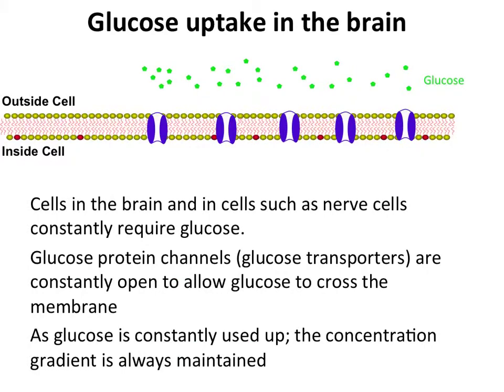The last thing important to note here — which will become apparent as we move on to talk about glucose transport into muscle and fat cells — is that these transport channels within the membrane are always there. That means they are not upregulated or downregulated. Instead, they are always expressed; they are always present in the membrane of these brain cells.